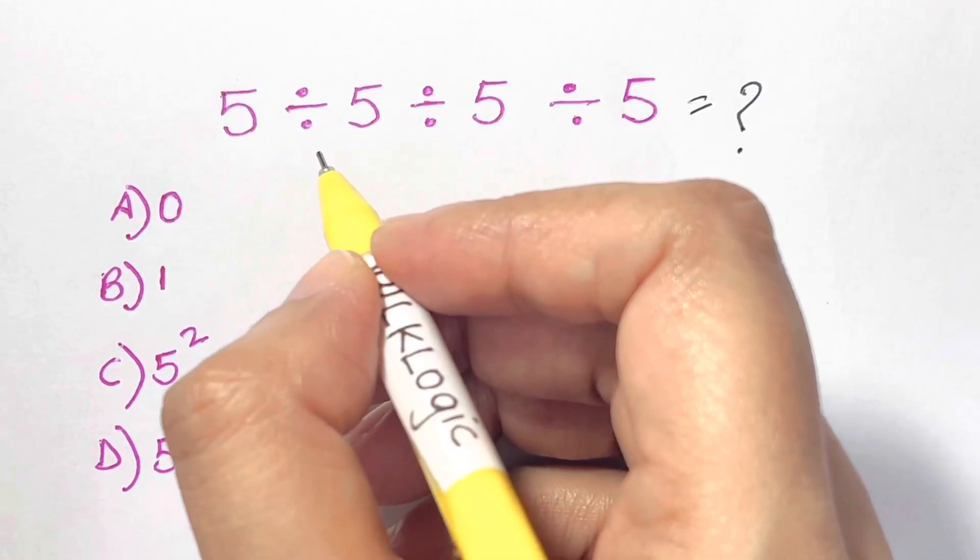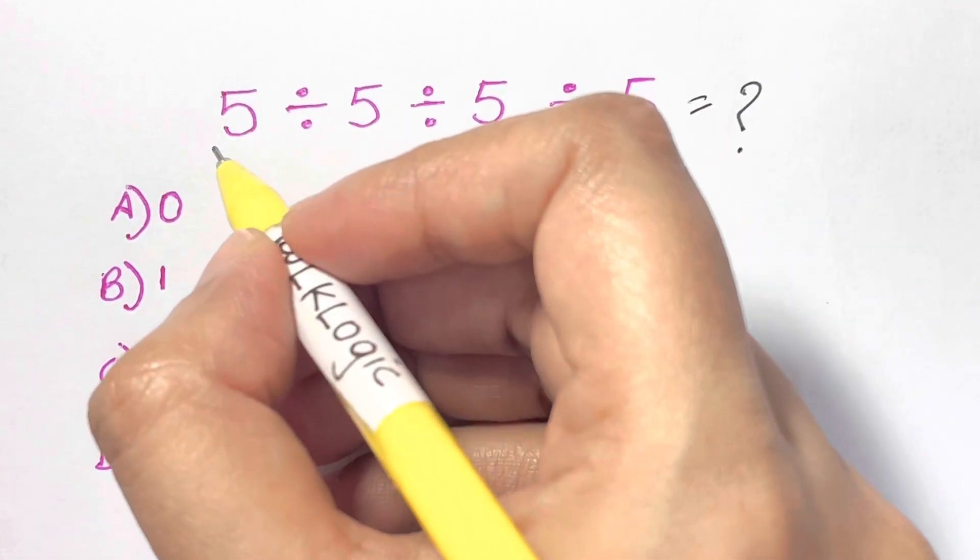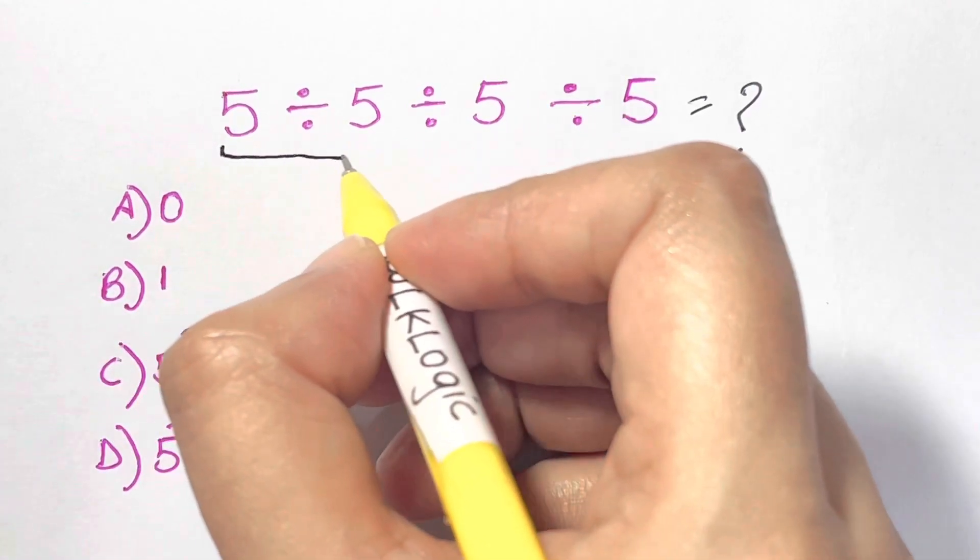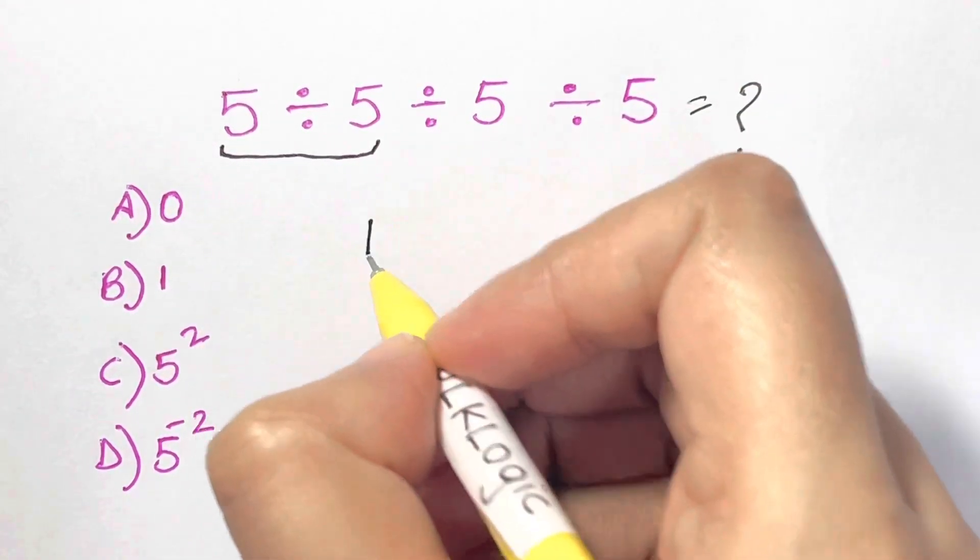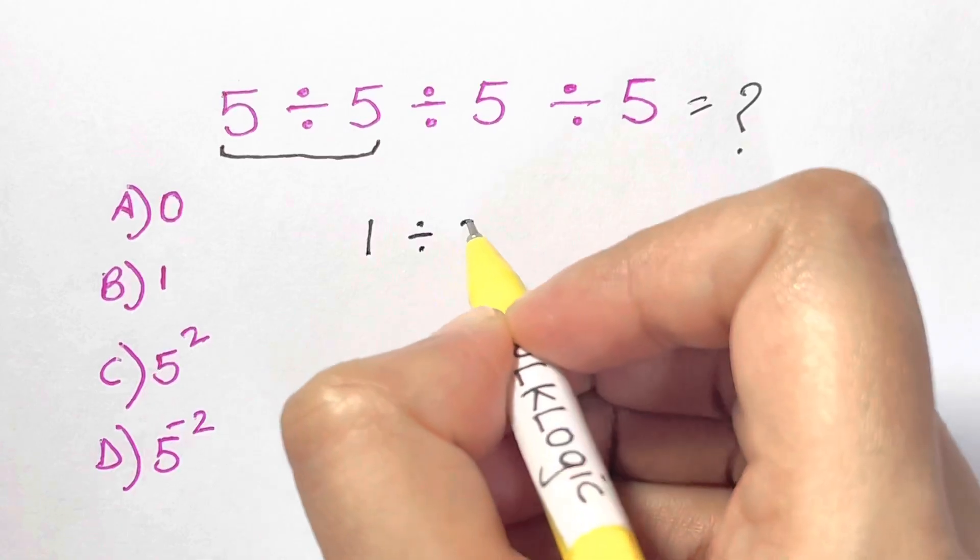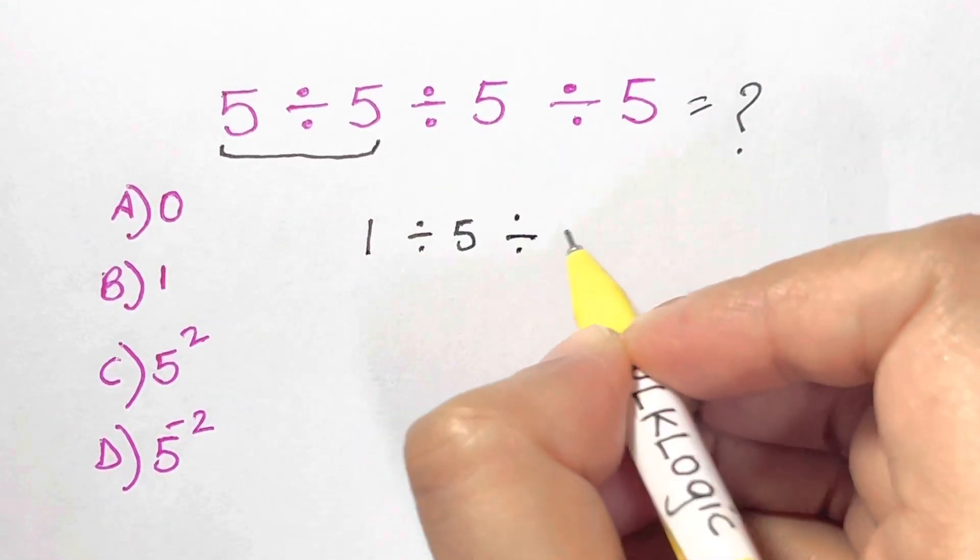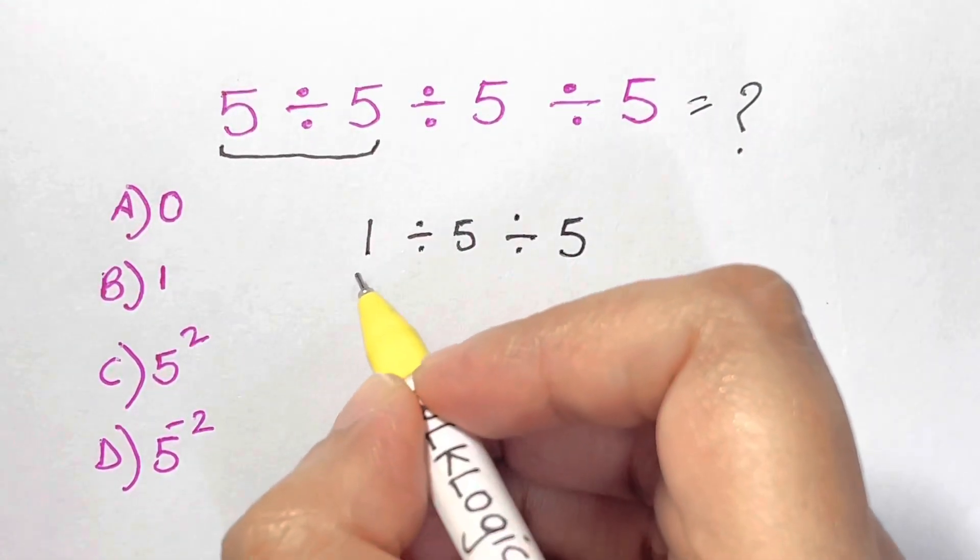So first of all, if you're using PEMDAS or BODMAS, just start from the left-hand side. 5 divided by 5 is 1, then again you have divided by 5 and you have divided by 5.